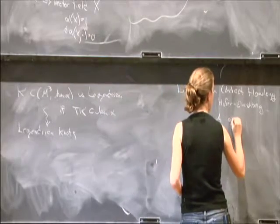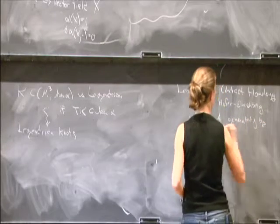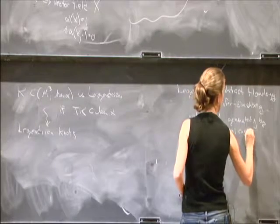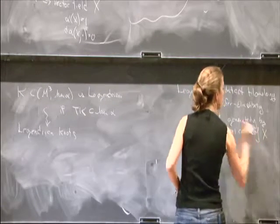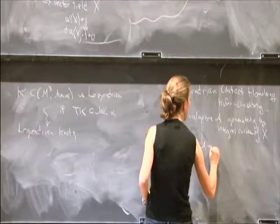So algebra A is generated by integral curves of this Reeb vector field. And then you can define a map from A to A,